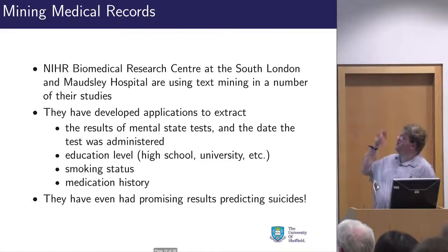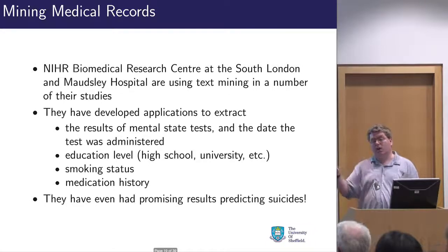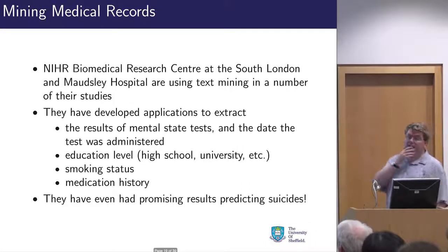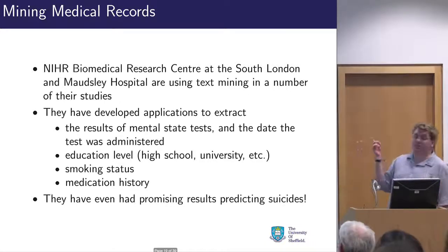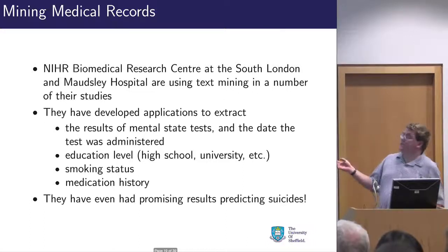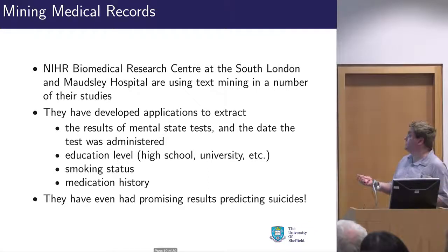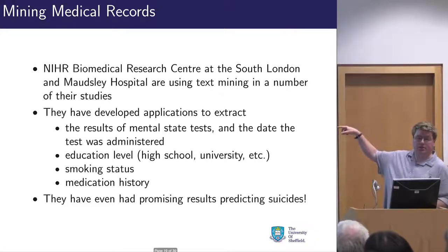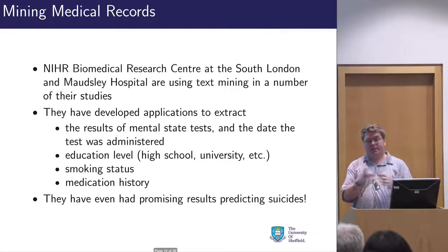Applications include detecting test results — mental state tests, for example, which have a form field that's nearly always blank — to track how people's mental state deteriorates over time. We also looked at education level, smoking history (specifically cigarettes, not other substances), and medication history: finding all drugs, dose information, frequency, start and stop dates. The current work uses data extracted from these applications plus machine learning to see if they can predict suicide risks earlier from free text.